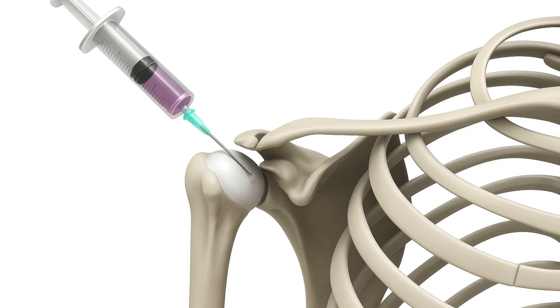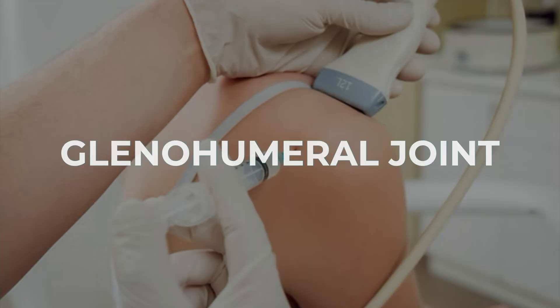The injection for frozen shoulder is in the joint itself — the glenohumeral joint, which is the shoulder proper — as opposed to the bursa, which was the target for the rotator cuff discussed earlier. People who have had a prior stroke or have Parkinson's disease, for example, are definitely prone to having frozen shoulder.